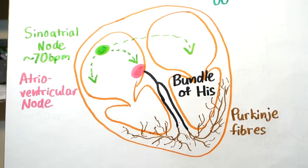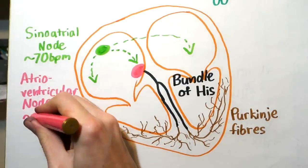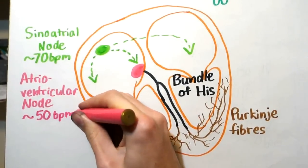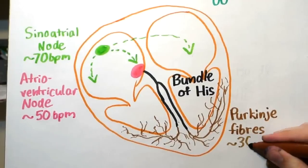However, the atrioventricular node and Purkinje fibers also passively generate electrical signals in case of failure of the preceding signals. The atrioventricular node will generate signals at 50 beats per minute, while the Purkinje fibers are slower at 30 beats per minute.